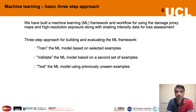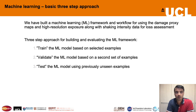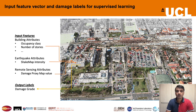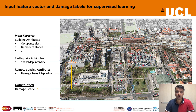We follow a three-step approach for building and evaluating the machine learning framework. The first step is to train the machine learning model based on a portion of the examples. The second step is to validate the model using a second set of examples not used for training. The third step is to test the model using previously completely unseen examples. For each building, we create an input feature vector comprising relevant building attributes, earthquake-related attributes, and remote sensing-derived attributes, alongside the damage grade label assigned by the inspection team.